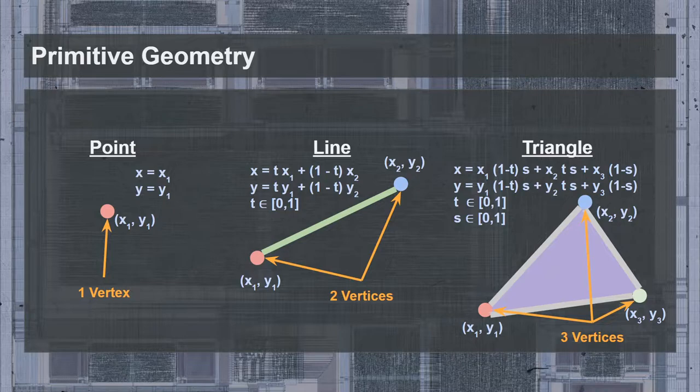Well, your monitor doesn't understand these equations, so we need to do some sort of processing to convert this description into something a display can understand. That being pixels. This process is called rasterization, and it's not just for triangles.